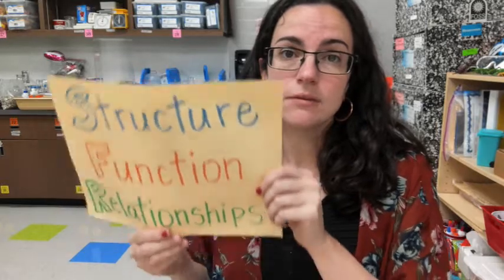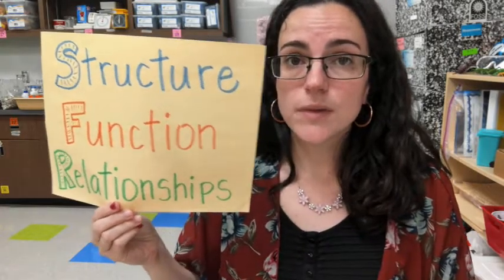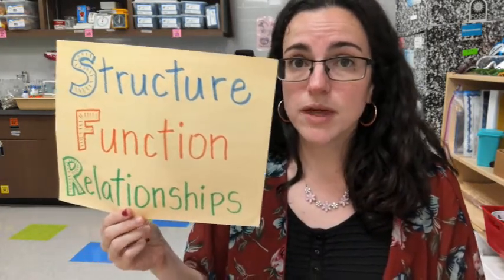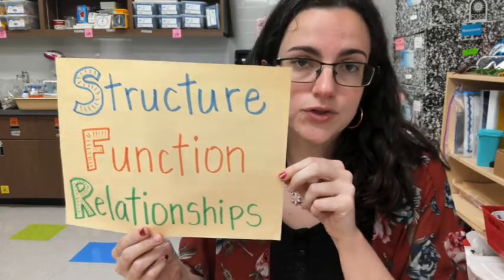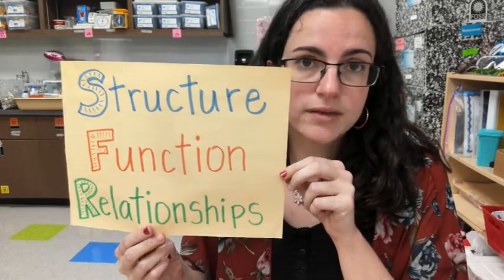Going back to that word taxonomy, what does it mean? Basically, you're just taking living organisms and dividing them into groups based on different characteristics. Some of those characteristics might be the structure of that living organism, maybe some of its functions, or even the relationships with that living organism.